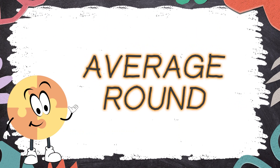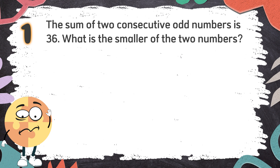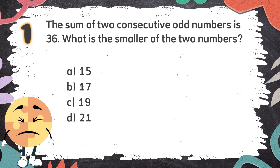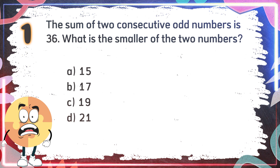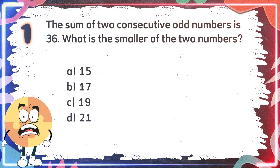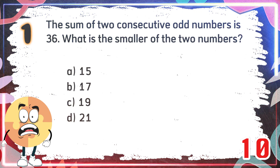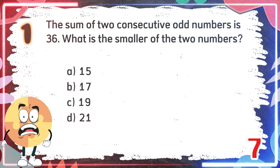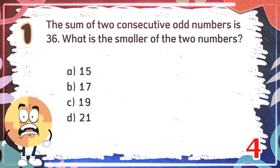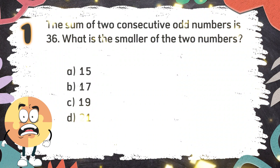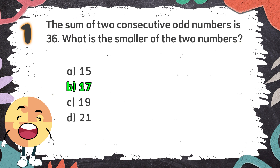Average Round. Number 1: The sum of two consecutive odd numbers is 36. What is the smaller of the two numbers? The choices are: A. 15, B. 17, C. 19, D. 21. The correct answer is B. 17.